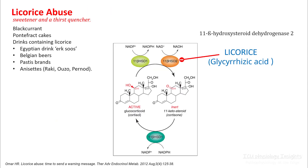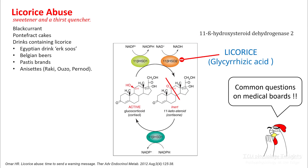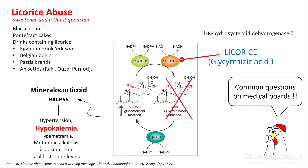Licorice is used as a sweetener and thirst quencher and is a very common board question, so know it well. Licorice inhibits 11-beta hydroxysteroid dehydrogenase 2 and this prevents inactivation of cortisol to cortisone. So increased cortisol level results in relative mineralocorticoid excess, and this results in hypertension, hypokalemia, and all other features of hyperaldosteronism.